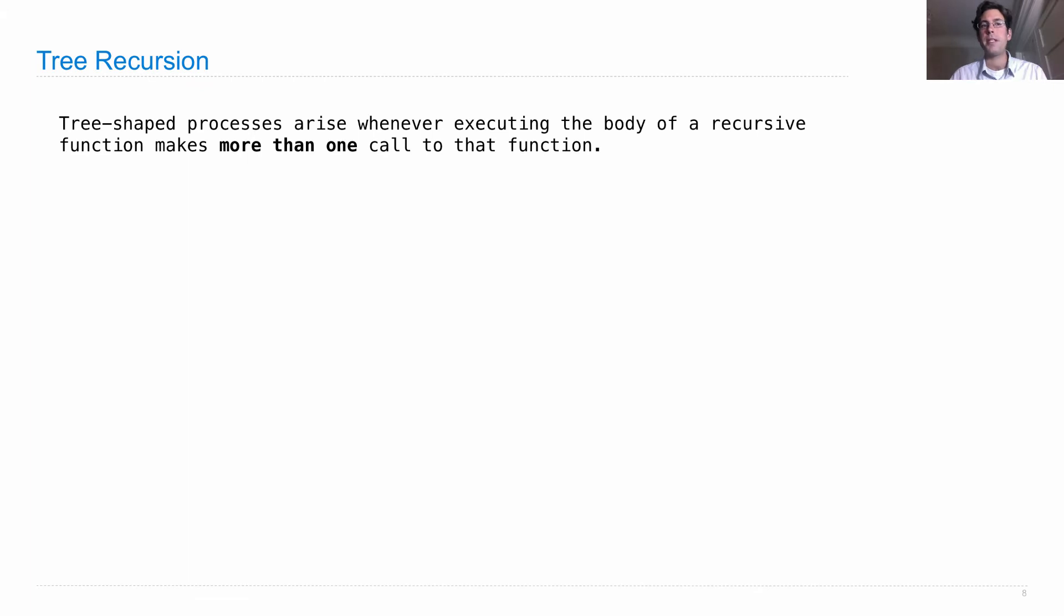Tree recursion gives rise to tree-shaped processes. A tree-shaped process happens whenever executing the body of a recursive function makes more than one call to that function.